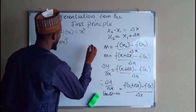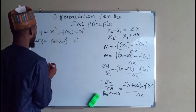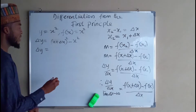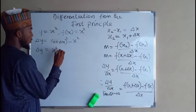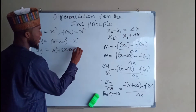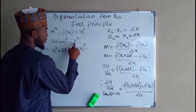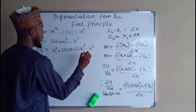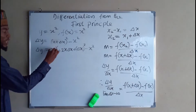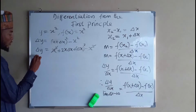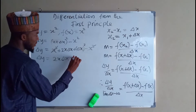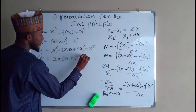Then, minus f of x, and f of x is x squared. If we expand this, we are going to get x squared plus 2x dx plus dx squared, minus x squared. We have x squared here and negative x squared, so they cancel out. So dy equals 2x dx plus dx squared.